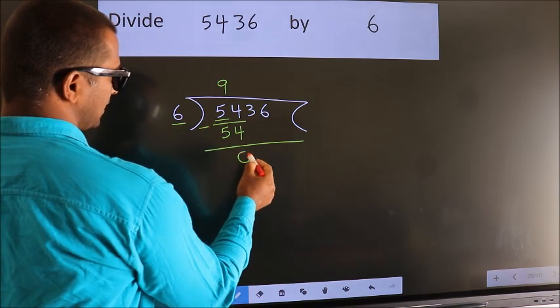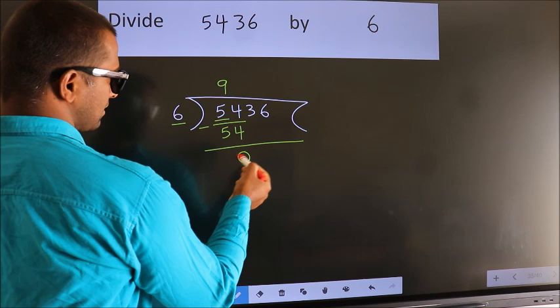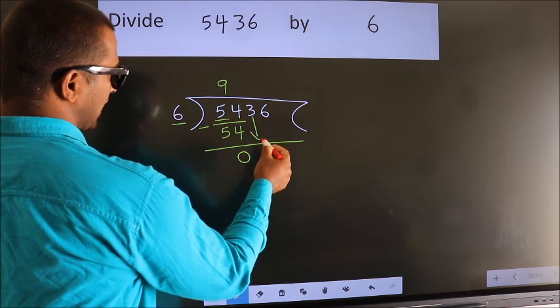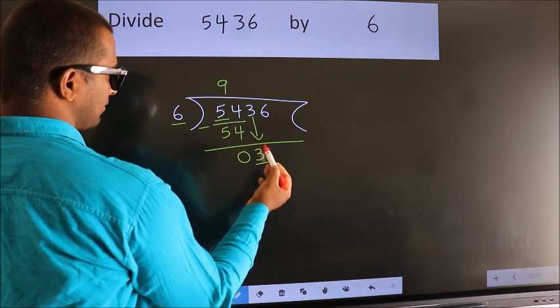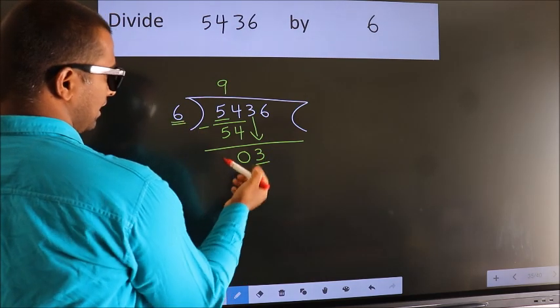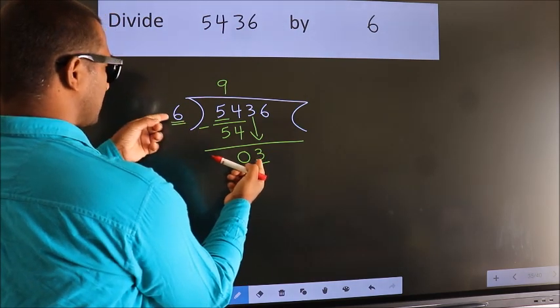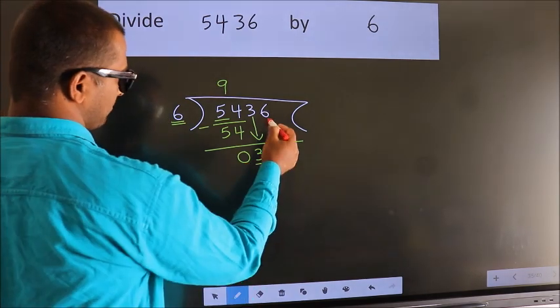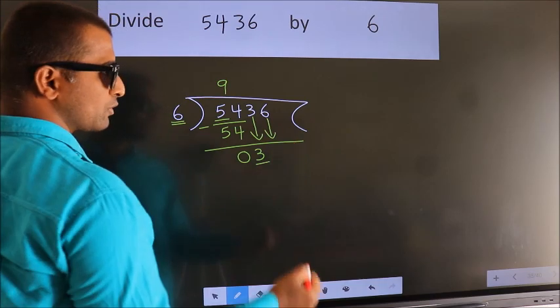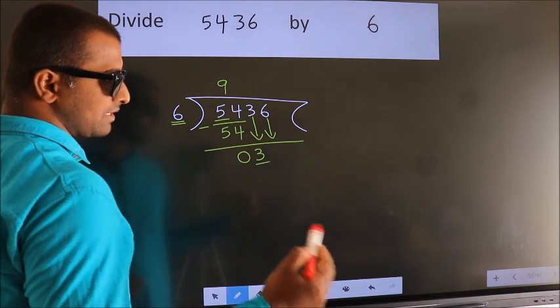We get 0. After this, bring down the beside number, so 3 down. Here we have 3. 3 is smaller than 6, so we should bring down the second number. And the rule to bring down the second number is: